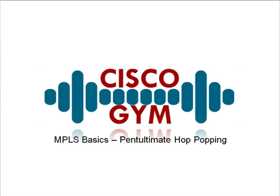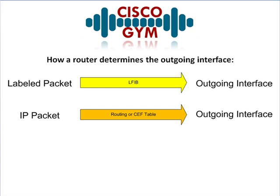Before we get into a definition of Penultimate Hop Popping, let's go ahead and do a quick review of how an MPLS-enabled router determines what outgoing interface to use for a packet it receives. If we remember back to the MPLS basics, there are really two places to look for the outgoing interface. If you receive a packet that's labeled, what you're going to do is look in your Label Forwarding Information Base, or LFIB. The router looks it up in the LFIB and it's generally going to have one of three major operations: the swap, pop, or push — and then the outgoing interface.